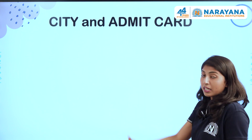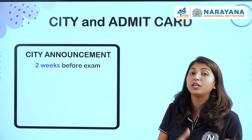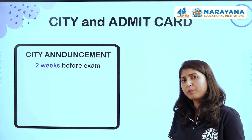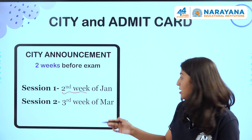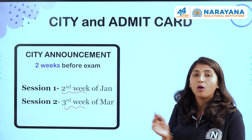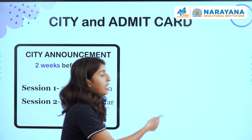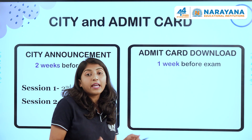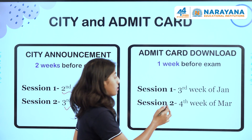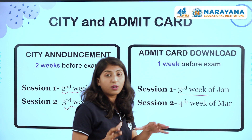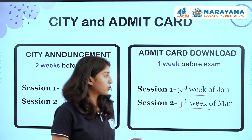Moving on to the city dates and admit card announcements. City announcements will be made two weeks prior to the examination. For Session 1, the city will be announced in the second week of January; for Session 2, it will be in the third week of March. Admit cards can be downloaded one week prior to the exam — for Session 1, by the third week of January, and for Session 2, by the fourth week of March.